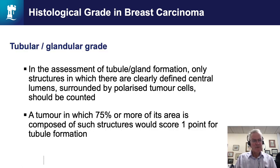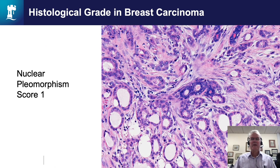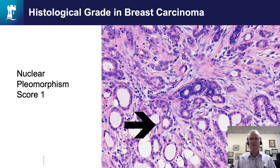The assessment of tubules and gland formation needs to be rigorous and should only apply to structures where there are clearly defined central lumens surrounded by polarized tumor cells. A tumor in which over 75% of its area is composed of such structures would score a one for tubule formation. In this particular cancer, some normal trapped breast epithelium is visible, and tumor cells infiltrating the stroma around these normal cells allow comparison of tumor cell nuclei with normal cell nuclei — these are relatively similar, so this case would be allocated a score of one for nuclear pleomorphism.